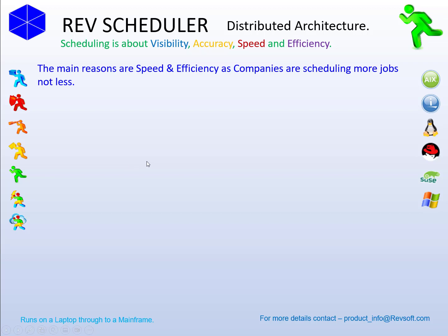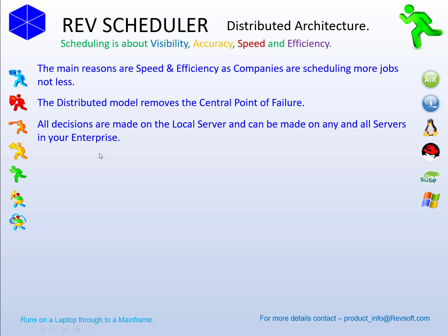As companies are scheduling more jobs these days and not less, and more companies are using automation software as well, the distributed model also removes a central point of failure. All decisions are made on the local servers and can be made on any and all of the servers in your enterprise. If you have RevScheduler running on 50 or 100 servers, you've got 50 or 100 decision makers, not one.